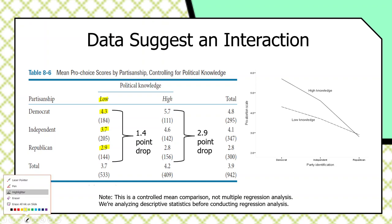Comparing that to the effect of partisanship among high knowledge respondents: high knowledge Democrats are at 5.7, dropping to 4.6 among independents and 2.8 among Republicans. The effect here is twice as strong — a drop of 2.9 points across values of partisanship. Also notice that the effect of knowledge for Democrats is rather pronounced: Democrats go from 4.3 to 5.7 — over a point and a half increase. But for Republicans, the effect of knowledge is virtually nothing: 2.9 to 2.8. So the effect of knowledge depends on partisanship, and the effect of partisanship depends on knowledge. We have a lot of interaction going on in this data.